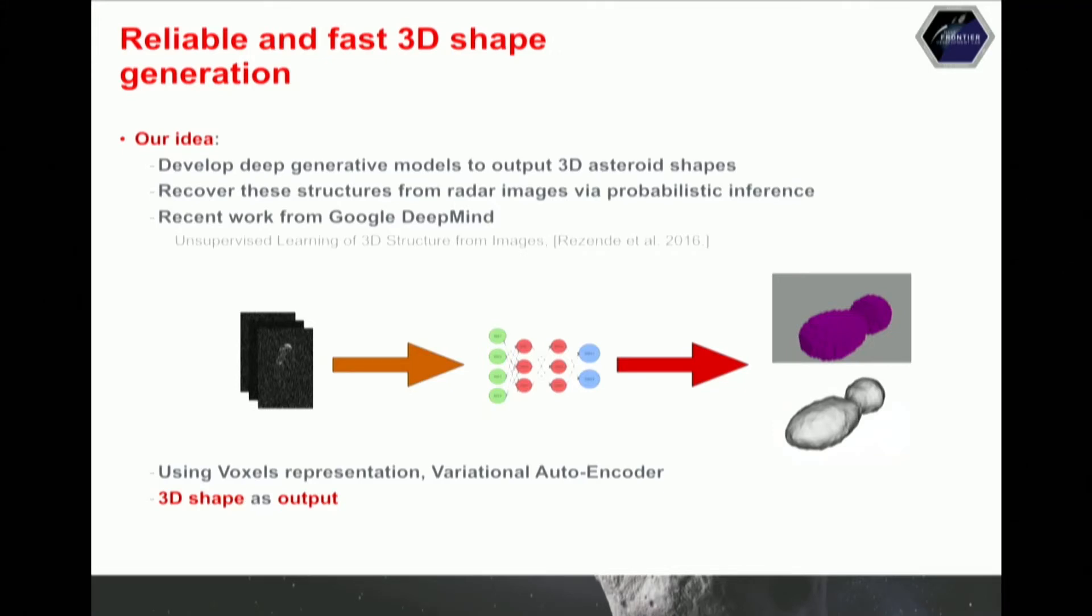This has not been done for 3D shapes. And we recently discovered that people at Google DeepMind have been working on this. We exchanged a little bit with them. We had some Skype calls to see what were the differences between our models. And the idea that we want to use is just using some radar image inputs, be able to, through our generative model, to output this voxelized representation of the asteroids. So, voxels are the equivalent of pixels. It's a measure unit in a 3D grid.